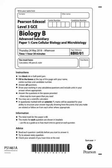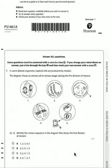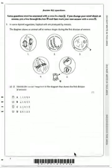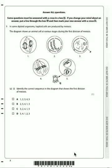Welcome back. We are going over Edexcel Biology paper 1, 2018, doing question number 1. In some diploid organisms, haploid cells are produced by meiosis. The only cells produced by meiosis that are haploid, in plants and animals, are always sex cells or gametes.